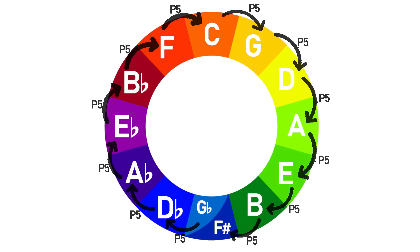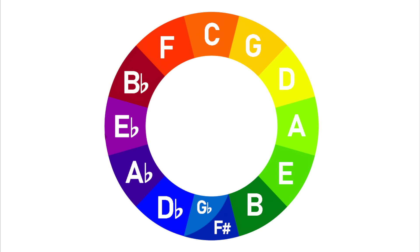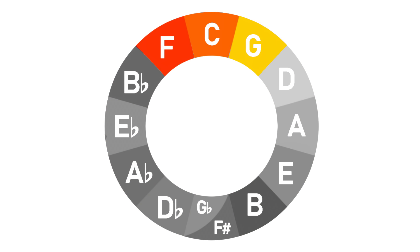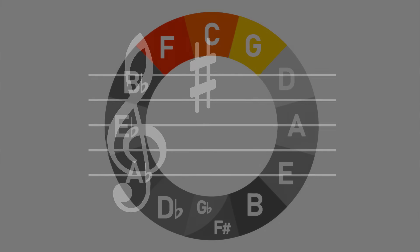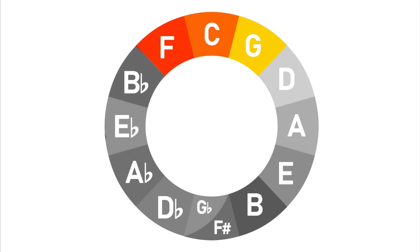Arranging the 12 notes around the circle is a very effective way to understand how closely related two notes are. For example, notes that are next door to each other on the circle of fifths will be closely related because they share all but one note with each other. C is sat next to F and G. The key of F is exactly the same as C major but has a B flat rather than B, and the key of G is exactly the same as C but has an F sharp rather than F natural. So these keys are highly compatible, and moving between them will result in a very smooth and cohesive modulation.